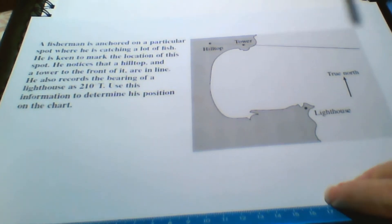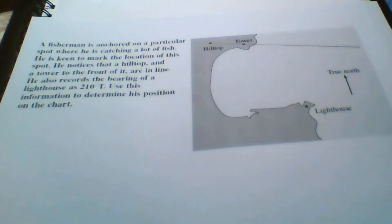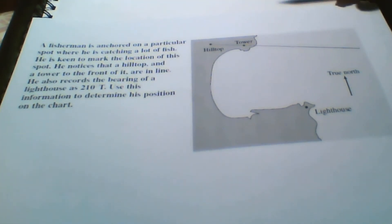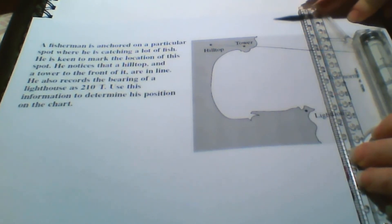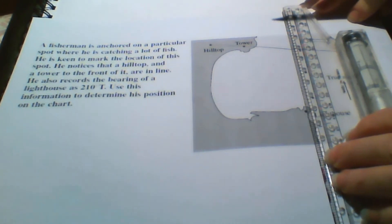Now the other thing that we know is that the boat has a bearing of the lighthouse of 210 degrees true. So we need to back bearing this from the lighthouse. We're going to put on a north line from the lighthouse using our roller ruler.